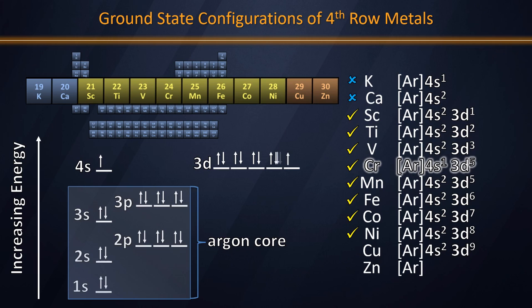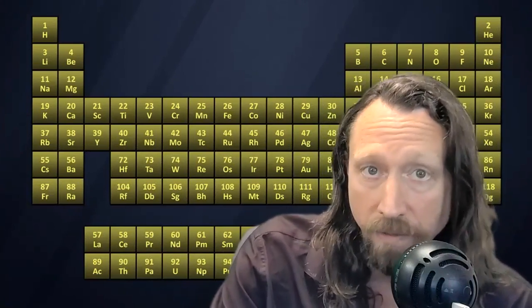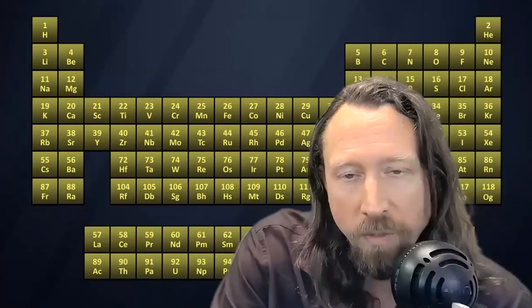However, copper is yet another one of those exceptions to the Aufbau principle. While one might anticipate 4S2, 3D9 electron configuration, in its ground state it actually has 3D10. Adding an additional electron for zinc gives us the closed 4S2 and 3D10 subshells, and so that leaves copper and zinc in question. We really can't say they're transition elements based upon the ground state electron configurations of their neutral atoms. So let's move on and consider their ions one by one.